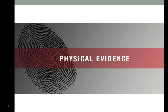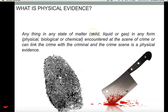Physical evidence is anything in any state of matter — solid, liquid, or gas. Solid examples include firearms, tools, or weapons. Liquid examples include blood, semen, or saliva. Gaseous examples include odors like perfume or smoke. Evidence may also be classified by form: chemical (chemicals), biological (blood, semen, saliva, plant material), or physical (tangible solid objects like weapons) encountered at the scene of crime.